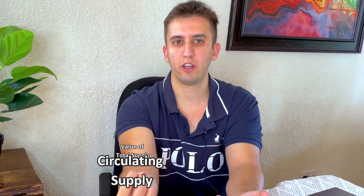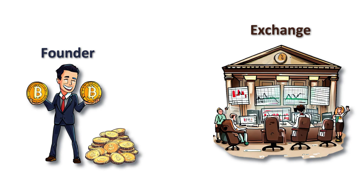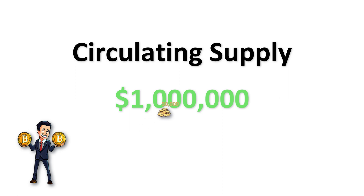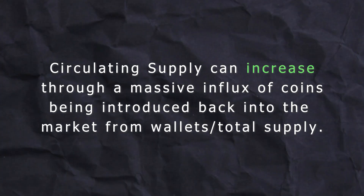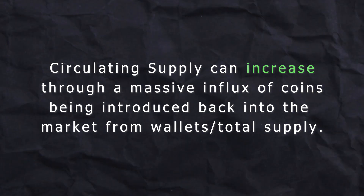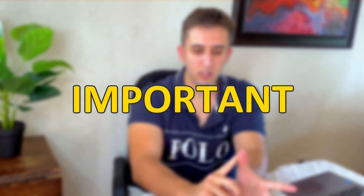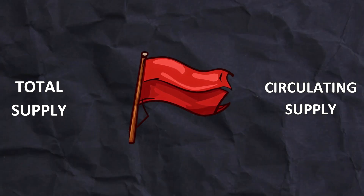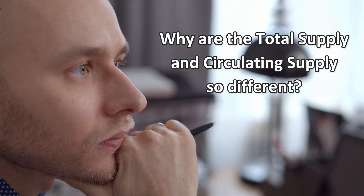Some of the value of the total supply can end up going into the circulating supply. If one of the founders puts their coins onto an exchange, that changes the circulating supply. For example, if the circulating supply was 1 million and a founder releases 50,000 tokens onto the market, now the circulating supply is 1 million plus those 50,000. If there's a huge difference between total supply and circulating supply, that could be a potential red flag and you need to research why.